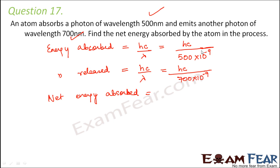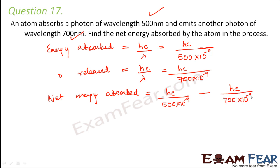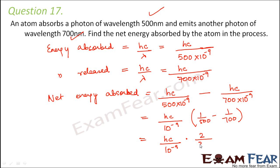Net energy absorbed equals hc / (500 × 10⁻⁹) minus hc / (700 × 10⁻⁹), which equals hc / 10⁻⁹ times (1/500 − 1/700). This simplifies to hc / 10⁻⁹ times 2/3500, giving a final value of 1.1 × 10⁻¹⁹ joules. That is the net energy absorbed by the atom in this process.